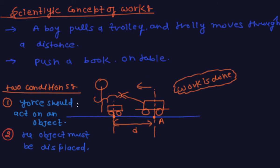So these two conditions need to be satisfied for work to be done. Let's see whether they are fulfilled in this diagram. The force acts on the trolley by the man, and the trolley is also displaced from A to B. So both conditions are fulfilled in this activity, and therefore work is done. I hope you understand what scientific work is and the difference between the everyday use of the word 'work' and the scientific concept.